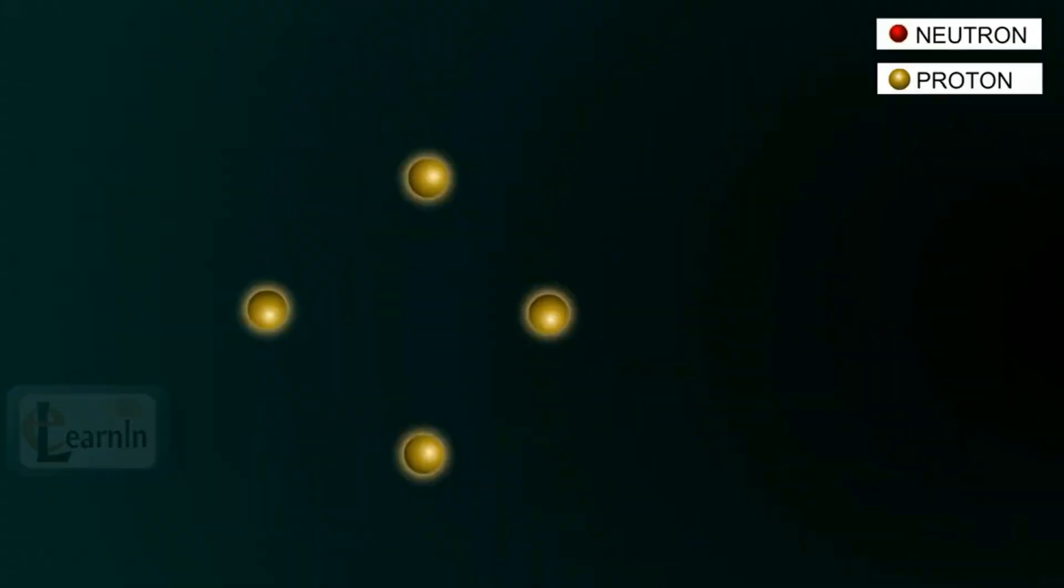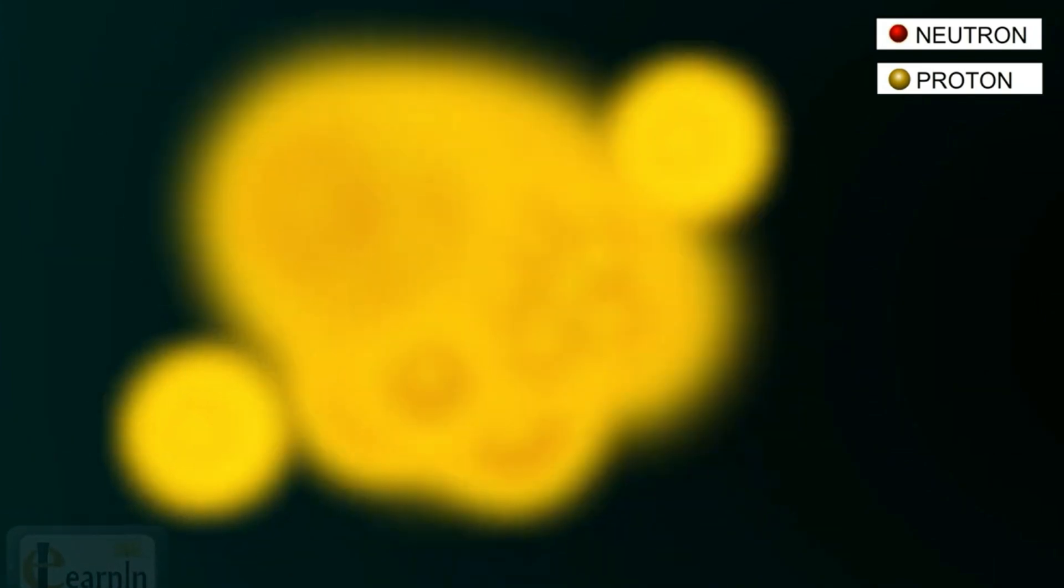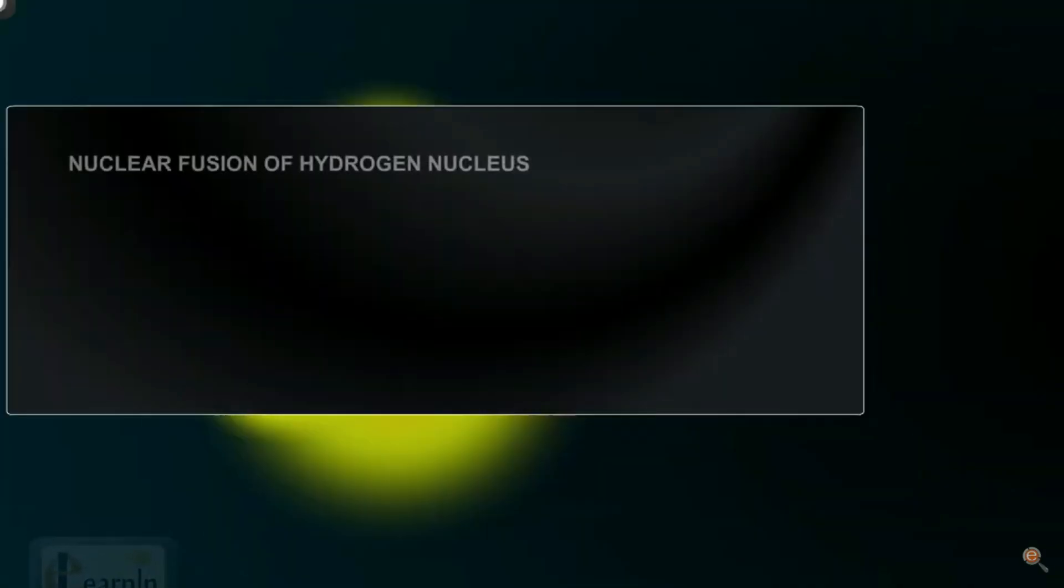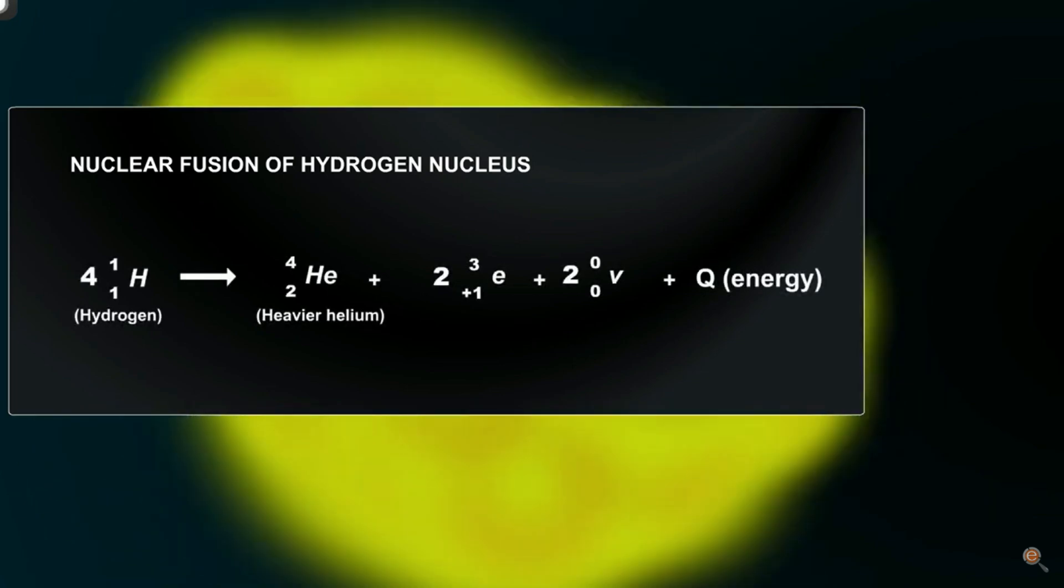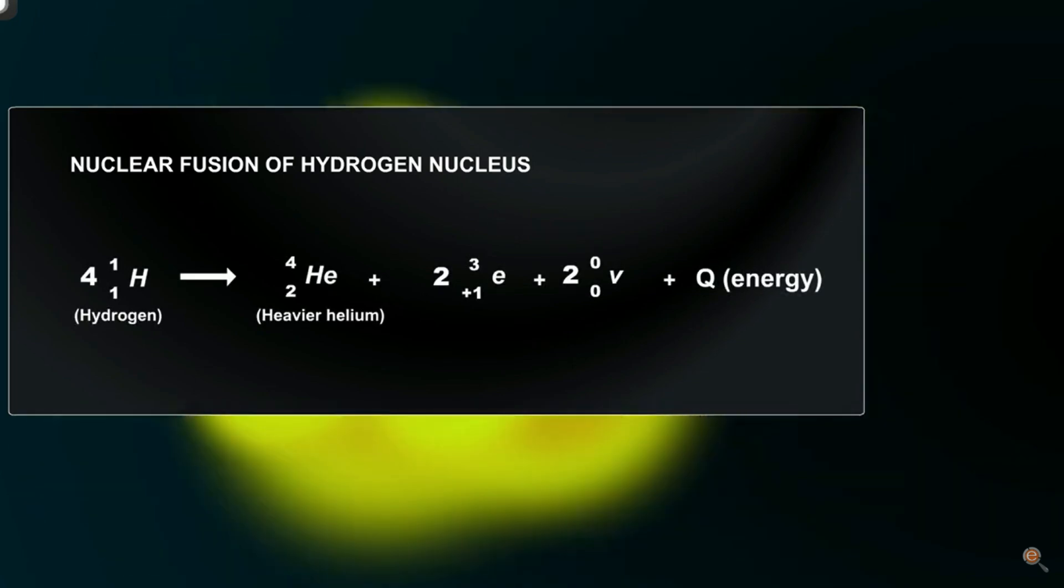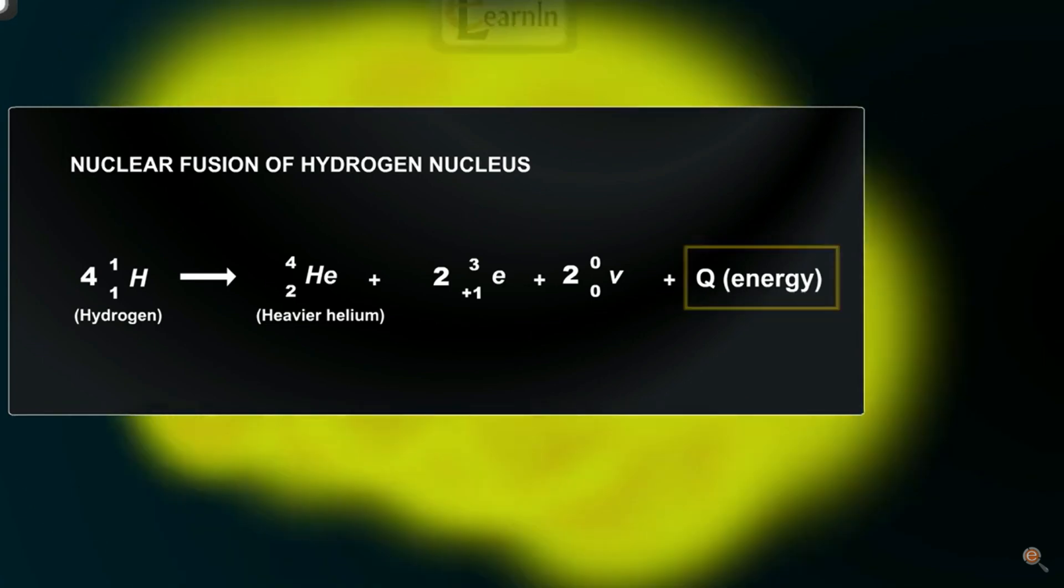In the sun, four hydrogen atoms fuse together to generate a helium atom. To be specific, four protons of the four hydrogen atoms, when they collide forcefully to become one helium, the overall mass of a helium atom is much less than the four hydrogen atoms. The additional mass converts into a huge amount of energy.